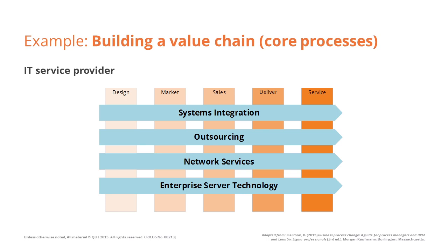So it would typically be different customers. The same notion of specialisation can be applied for service providers. For example, the typical value chain of core processes for an insurance company — insurance product development, sales, and claims — is specialised according to the different types of insurance products provided by the company, such as home insurance, motor insurance, and commercial insurance.